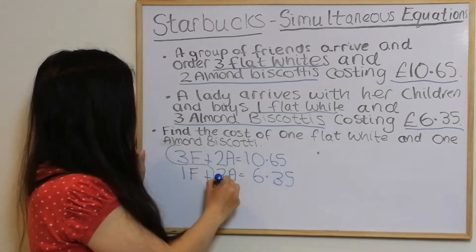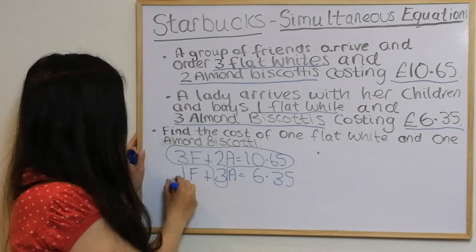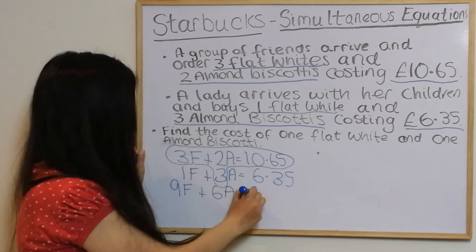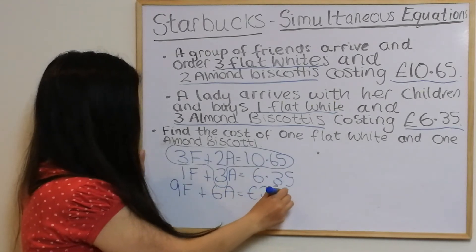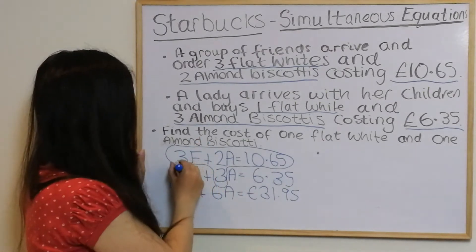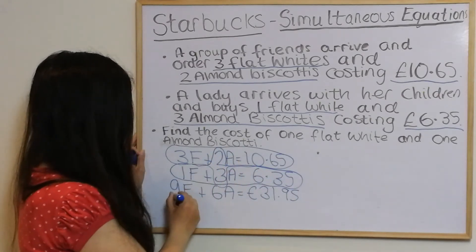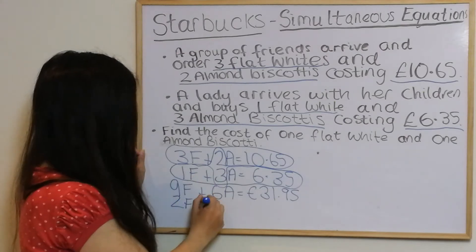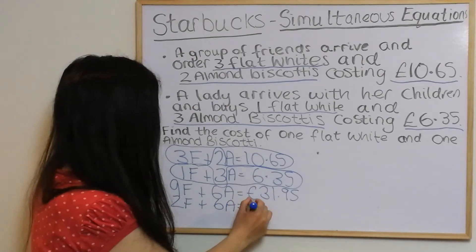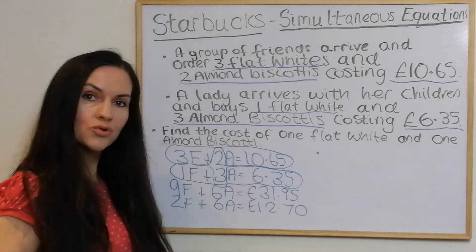Using the coat hanger, we multiply everything in the top equation by three to get 9f plus 6a equals thirty-one pounds ninety-five. Then we multiply everything in the bottom equation by two to get 2f plus 6a equals twelve pounds seventy. Because we have the same signs, we're going to subtract.